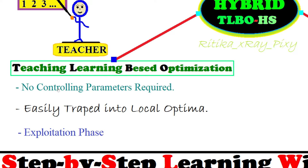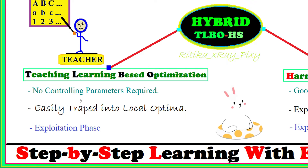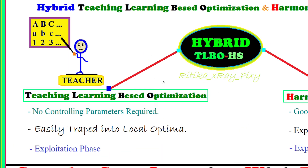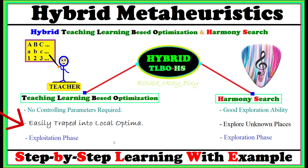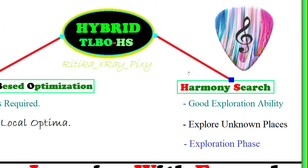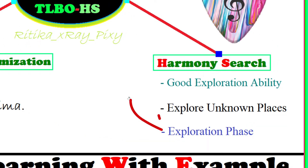Teaching learning based optimization algorithm has two important phases: teacher phase and learner phase. The simplicity of this algorithm is that no controlling parameters are required. However, this is also a drawback — due to lack of controlling parameters, this algorithm easily gets stuck in the local optima, and once stuck, it cannot reach the global optimal solution. That is why the author combined TLBO with harmony search algorithm, which can explore unknown places and has good exploration ability.